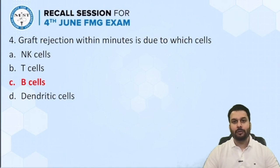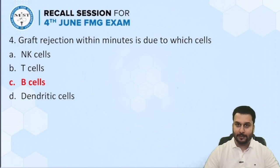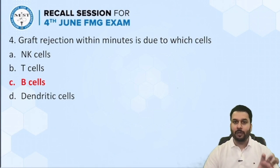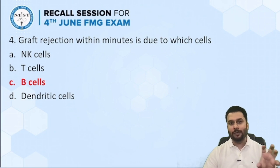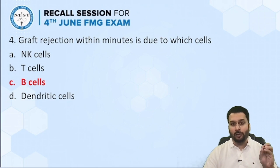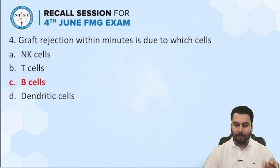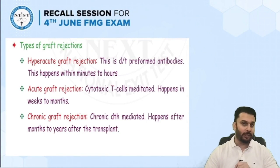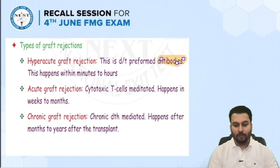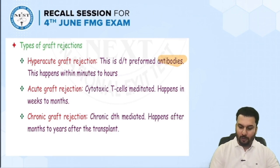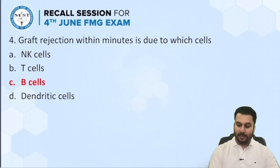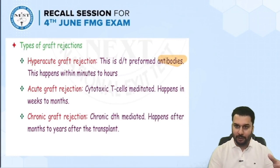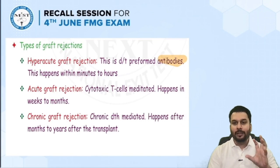Graft rejection that happens within minutes is due to which cells? I'm not entirely sure about this question, but from what students described, they mentioned graft rejection with an early time duration. If it happened within minutes, they are talking about hyperacute graft rejection, which is due to preformed antibodies — and antibodies come from B cells. If the duration mentioned was much later, acute or chronic, then T cells are involved.